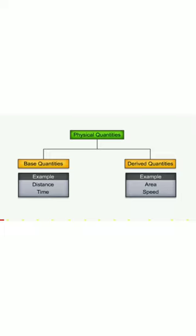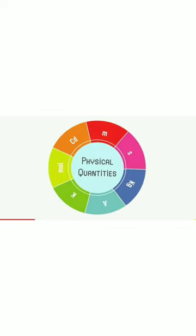Now we are going to talk about physical quantities. A physical quantity is one which can be measured directly or indirectly. Physical quantities are of two types: base quantities and derived quantities. Base quantities are the fundamental quantities — basically there are seven fundamental or base quantities. Derived quantities are those which can be derived with the help of fundamental physical quantities, and there are 100 of them.